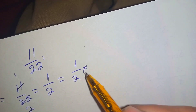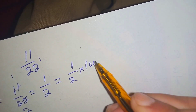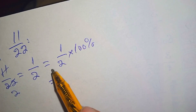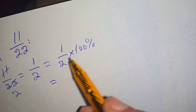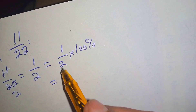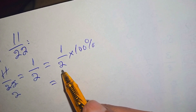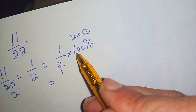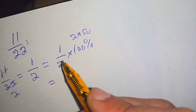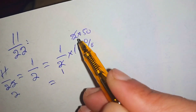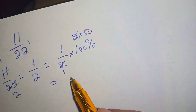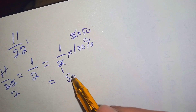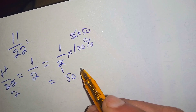So 1 over 2 multiplied by 100 percent. We can easily divide 100 by 2: 2 times 50 is 100, so we cancel out this 2 with this 2 and write the remaining terms.